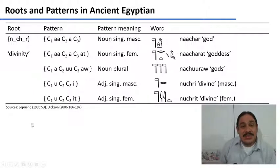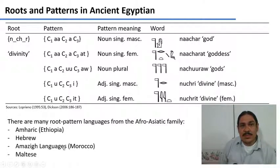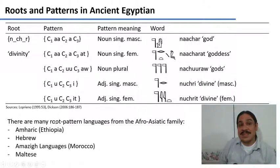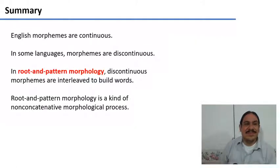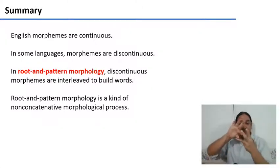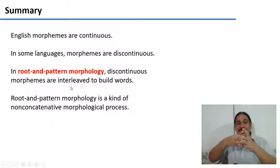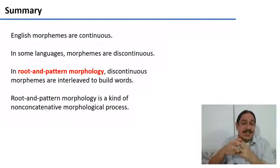Many languages use root and pattern morphology, and they all belong to the Afro-Asiatic family. Amharic from Ethiopia uses it, as do Hebrew, the Amazigh languages from northeastern Africa — for example in Morocco — and Maltese in the Mediterranean. In summary, English morphemes are continuous because their phonemes are always in a sequence. But in some languages, morphemes are discontinuous — you don't see their phonemes one next to the other. We call this root and pattern morphology, where morphemes are interleaved to build words. This is a kind of non-concatenative morphological process.